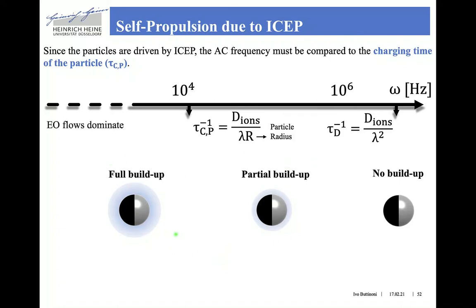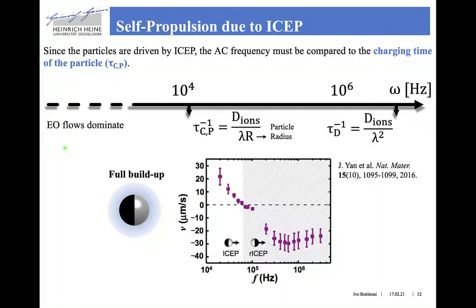Self-propulsion due to induced charge electrophoresis works in the two partial build-up regions. However, at lower frequencies, the electroosmotic flows typically dominate. So in practice, experiments of active colloids driven by induced charge electrophoresis are done in the region where the slip velocity decreases with the applied frequency.